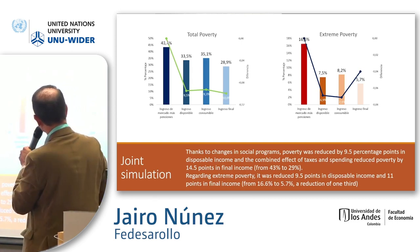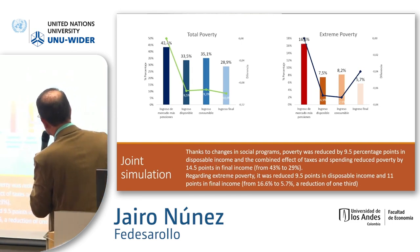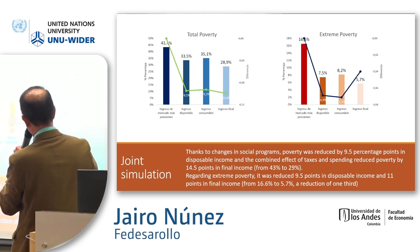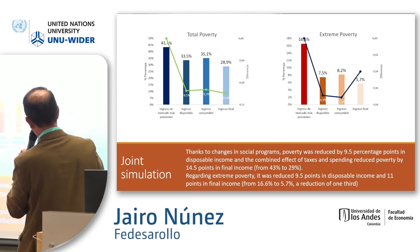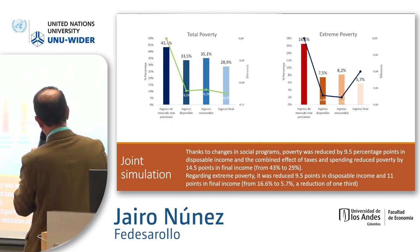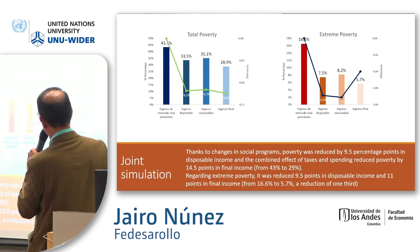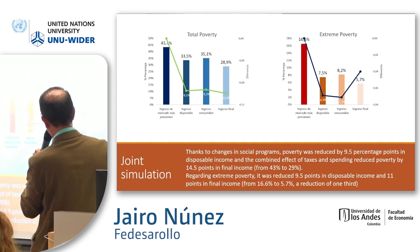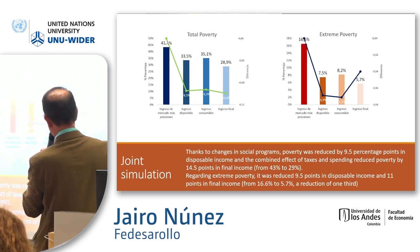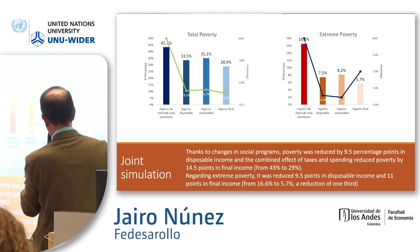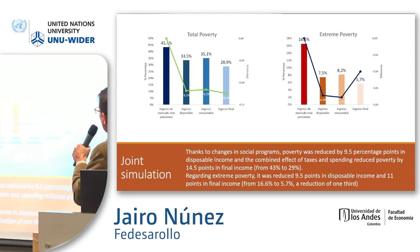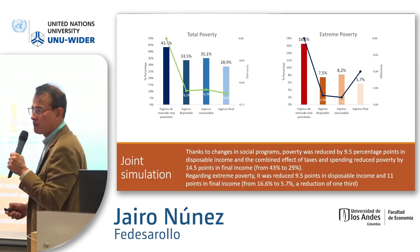Regarding extreme poverty, it was reduced by 9.5 points in disposable income and 11.1 points in final income — from 16% to 6% — a reduction of one-third in extreme poverty.